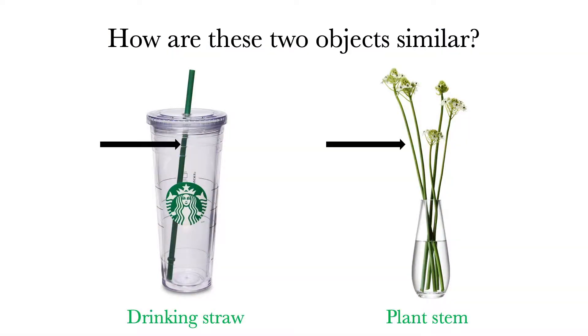How is this drinking straw and plant stem similar? Well, on the surface, they're both green, and they're both thin and long. But if we thought a little deeper, we could come up with the fact that they both help draw water up to the surface.